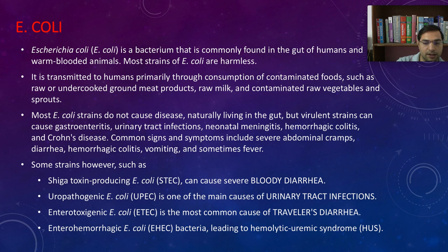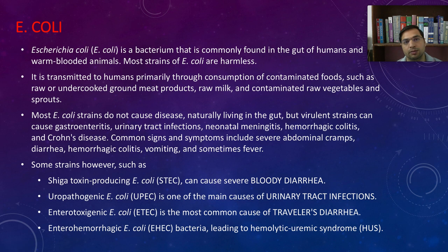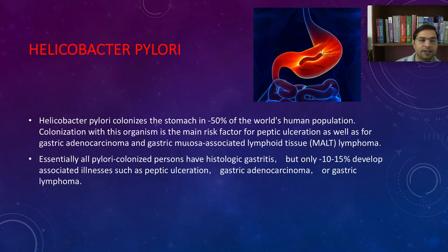If someone traveling to another place gets diarrhea, it is generally the enterotoxigenic strain of E. coli. Enterohemorrhagic E. coli leads to hemolytic uremic syndrome — excessive breakdown of red blood cells in the blood, with hemoglobin passing through the urine and elevated urea. Always remember E. coli is an important cause for both diarrhea and UTI.